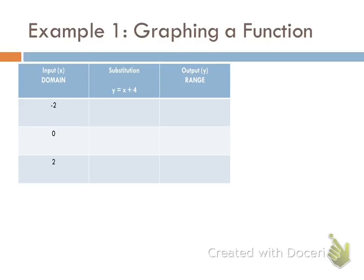Alright, and we're going to go ahead and fill in this input-output table. So how do I figure out what my output is going to be? Do I just make up the numbers? How do I know if my input is negative 2, how do I know what my output is going to be?